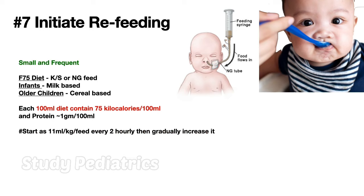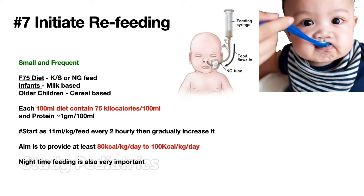We start with 11 ml per kg per feed every 2 hours and then gradually increase. Our aim is to provide at least 80 to 100 kilocalories per kg per day. Night-time feeding is very important, as parents often forget to feed their child at night and the child ends up with hypothermia and hypoglycemia in the morning. If the child accepts the feed, gradually increase the calories.